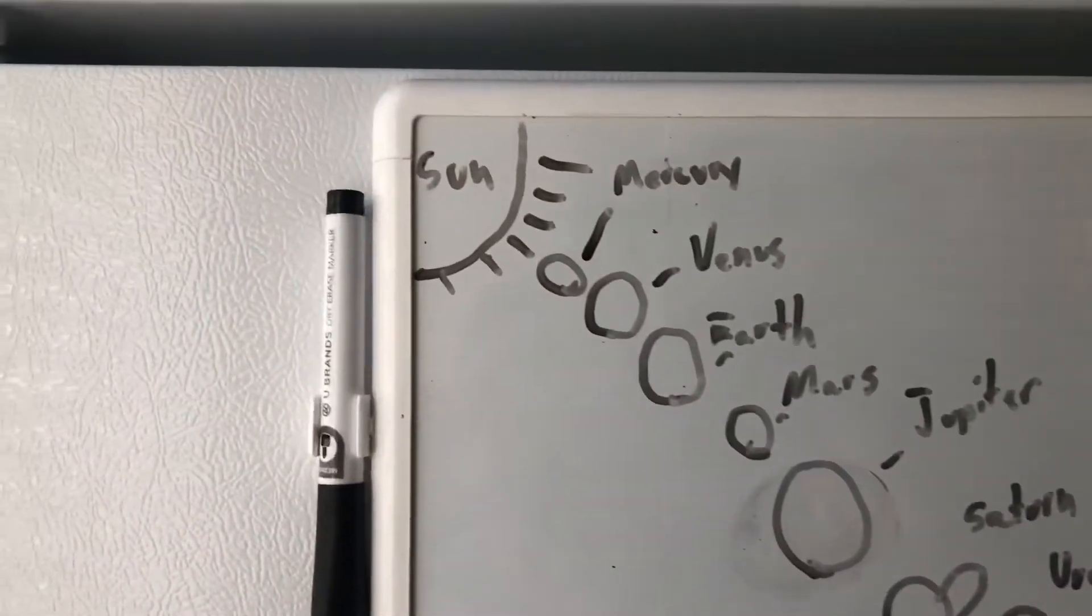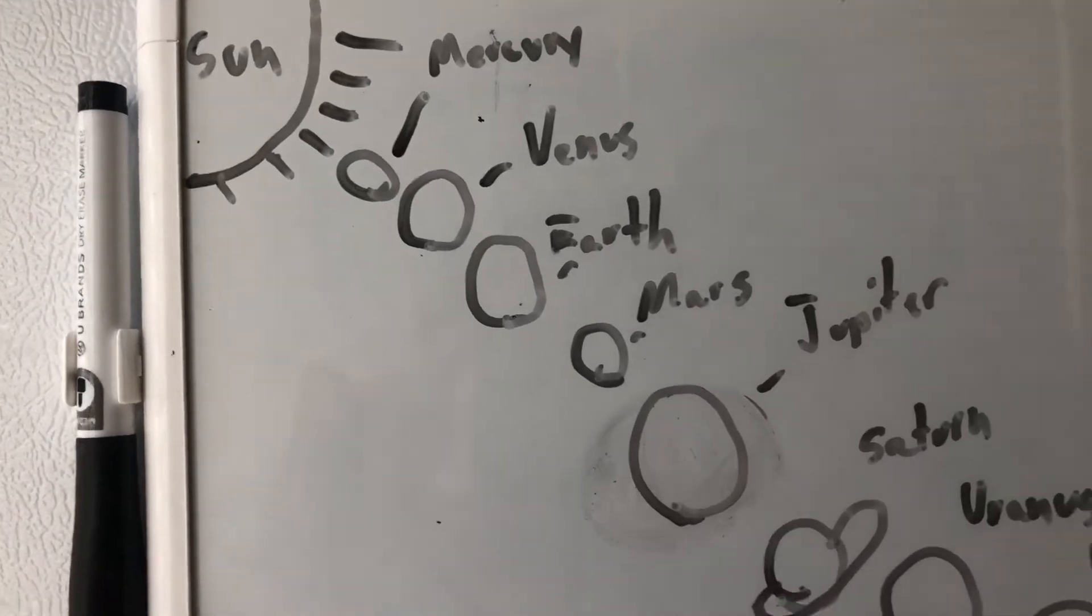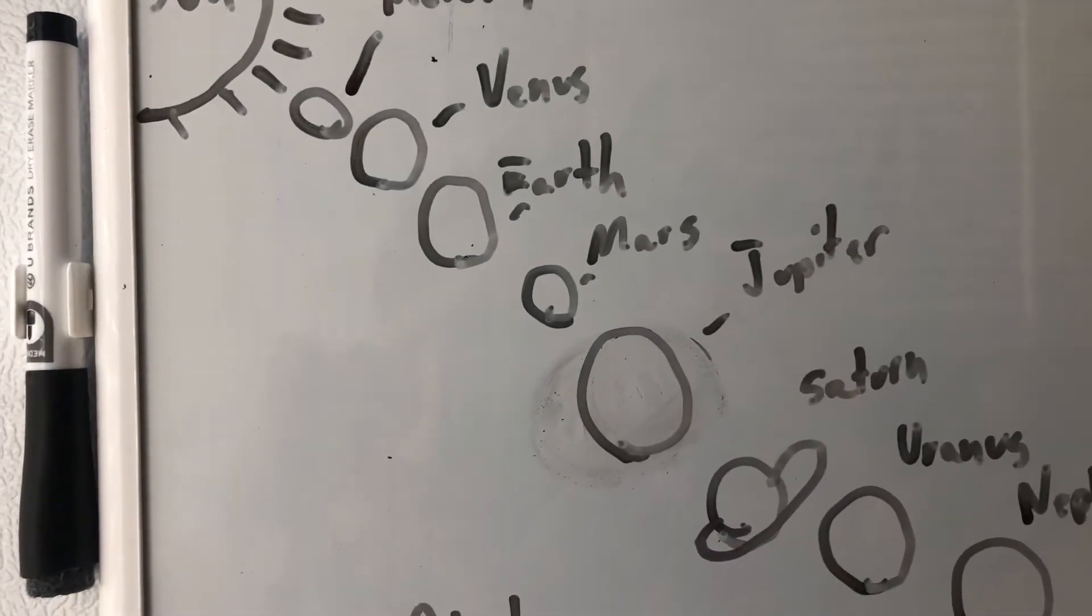Now a quick little disclaimer. We have the sun right over here. We have Mercury and Venus, which I did. I believe Jose did Earth and Mars.